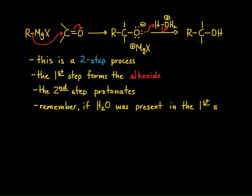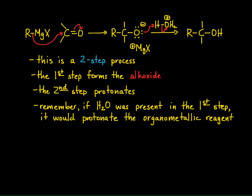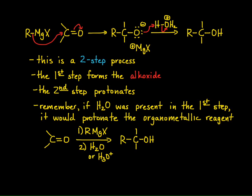We have to show it in two steps because if water were present in the first step — notice we're reacting a Grignard with a carbonyl with no water present, that's the first step — then in the second step we introduce water. The reason is that the Grignard reagent or organolithium reagent is a strong base, and water will protonate the organometallic reagent. The carbonyl aldehyde or ketone first reacts with a Grignard or organolithium reagent, followed by a second step introducing water or an aqueous acid. Either water or H3O+ will protonate the alkoxide and you generate the alcohol.